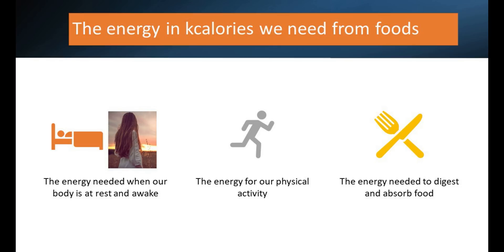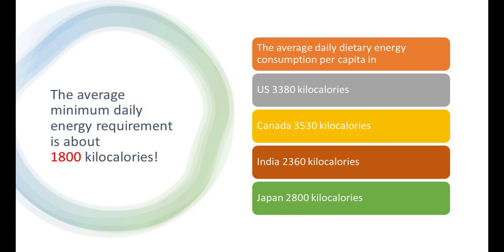According to the Food and Agriculture Organization of the United Nations, the average minimum daily energy requirement is about 1,800 kilocalories per person. More examples according to FAO: the average daily dietary energy consumption per capita is 3,800 kilocalories in the United States, 3,530 kcal in Canada, 2,360 kilocalories in India, and 2,800 kilocalories in Japan.